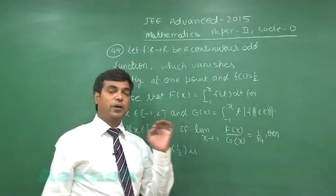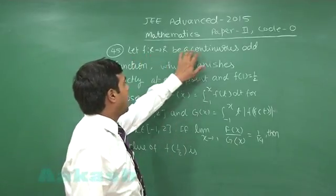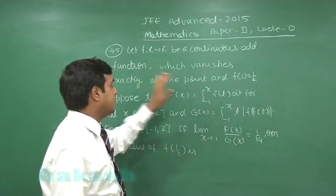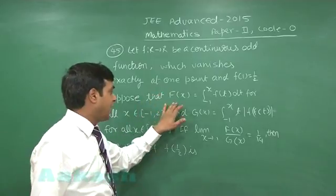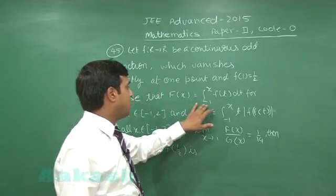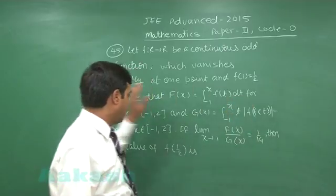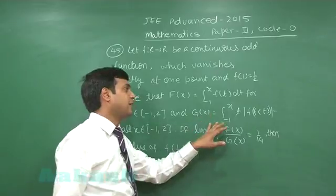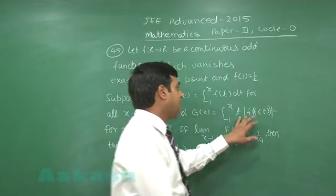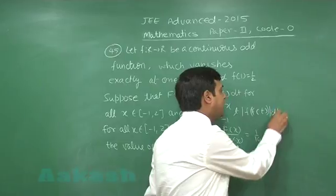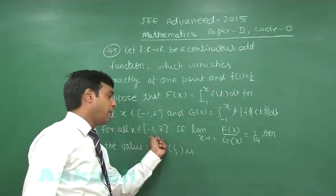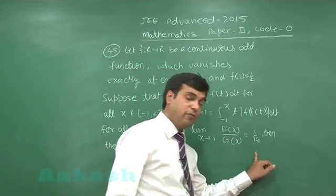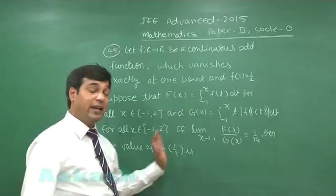Ok, let us go for 45. Let f from r to r be a continuous odd function which vanishes exactly at one point and f 1 equals half. Suppose that capital F x equals minus 1 to x small f t dt for all x from minus 1 to 2, and g x equals minus 1 to x t mod f of f t dt for all x from minus 1 to 2. If limit x approaching to 1 f x by g x is 1 by 14, then we have to find the value of f half.